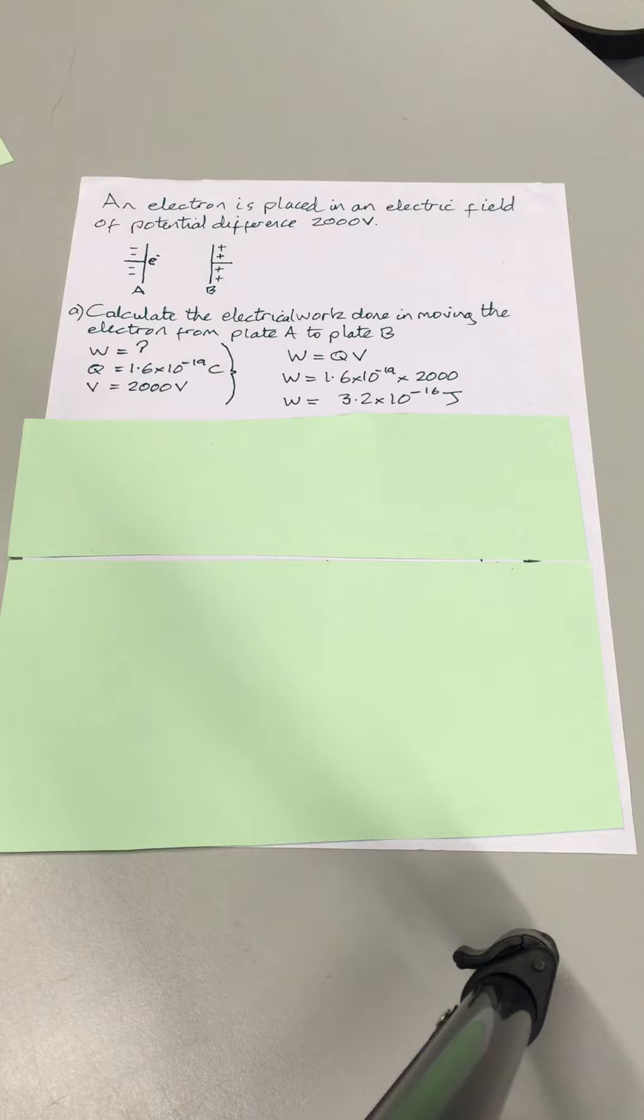As stated earlier, the work done in moving a charged particle in an electric field is equal to the magnitude of the charge and the size of the potential difference. In this case, with it being an electron, the charge is 1.6 times 10 to the negative 19 coulombs. You can find that in your datasheet.